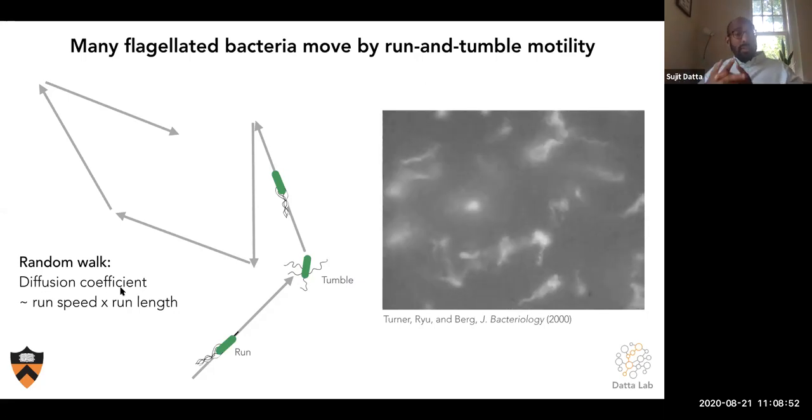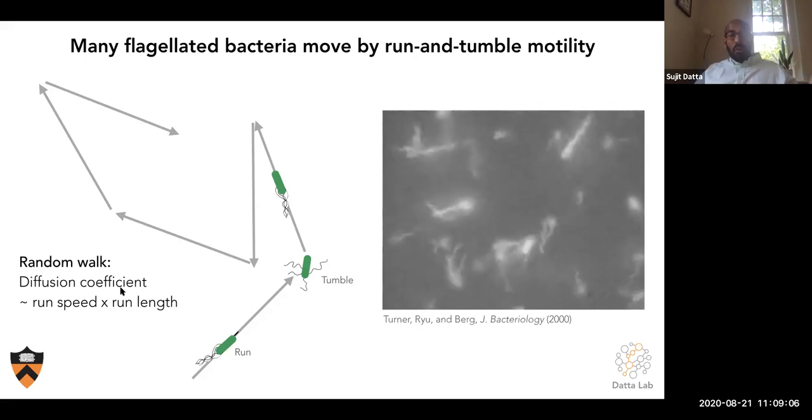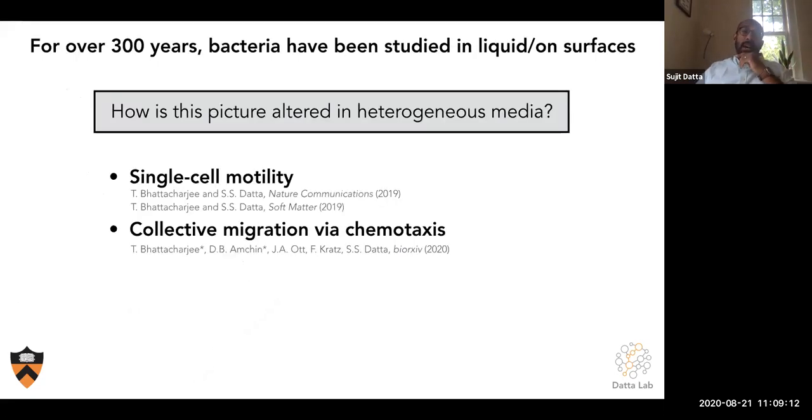Our question is, how does this picture change when you confine these bacteria in a heterogeneous porous medium? The short answer is, before we started this work, we didn't really know because you can't actually look at what's going on inside soil or a sediment or a tissue - they're opaque. But you can construct models. Today I'll tell you about some of the work we've been doing looking at the motility of individual cells of E. coli in heterogeneous media. That was reported in these two papers. I'll give you a brief glimpse of our recent work looking at collective migration of dense populations in heterogeneous media. We just posted this work on the bioRxiv a few weeks ago.